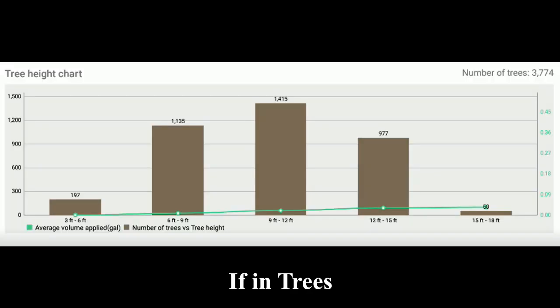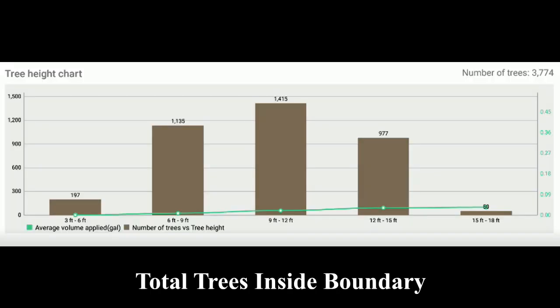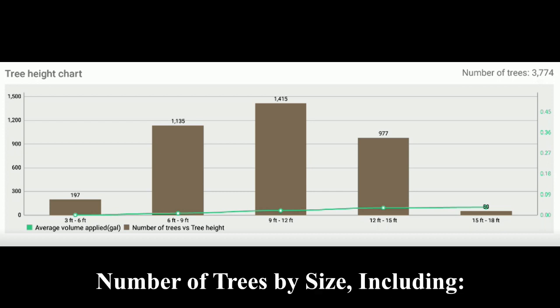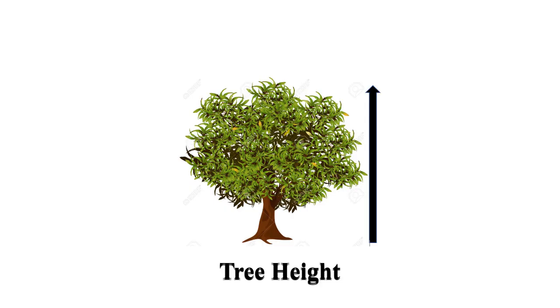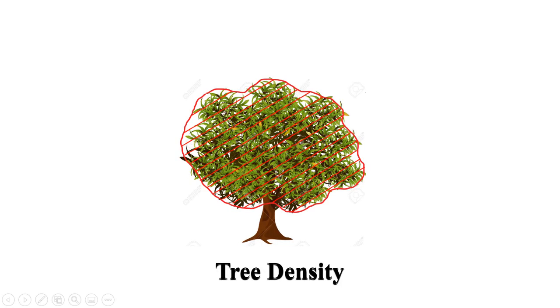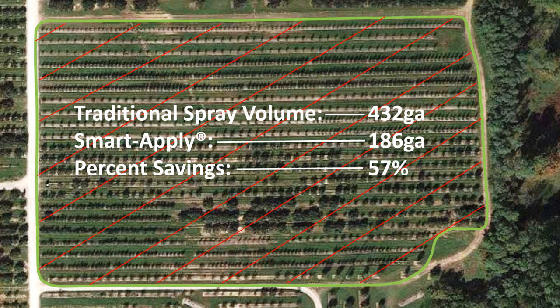Report your data. If in trees, detailed statistics include total tree count within the boundary, number of trees by size, including each tree's height, tree width, and tree density per tree.